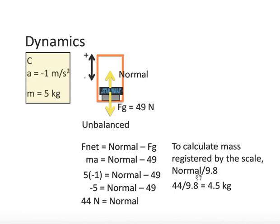To calculate mass registered by a scale, once again, divide by 9.8, the normal force. And, notice this time, we get a smaller mass. The mass here is 5 kilograms, and the mass, as indicated by the scale, is only 4.5 kilograms. Does this make sense?